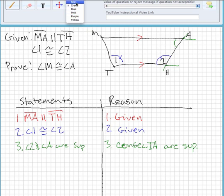So we go on to our next statement. We're going to say that angle M and angle 1 are supplementary. And it's the same reason: two parallel lines cut by a transversal, the consecutive interior angles are supplementary. So we'll write that.